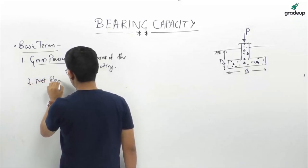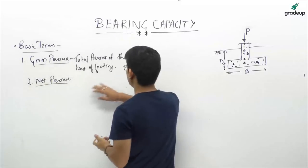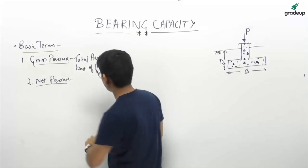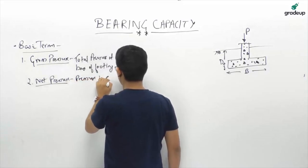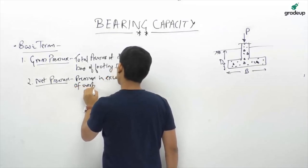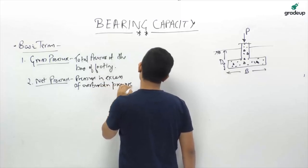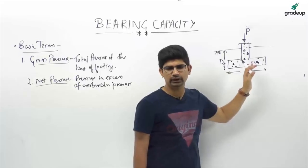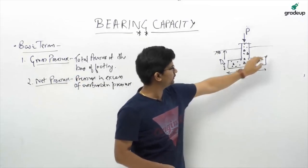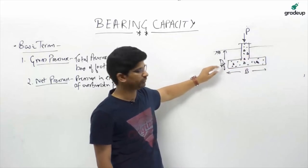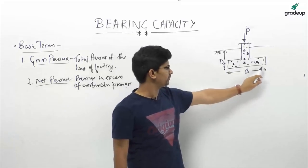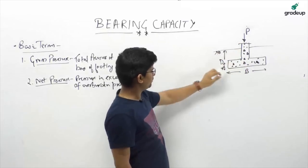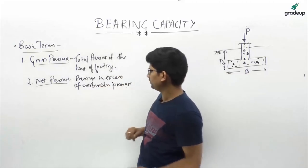Net pressure is the pressure in excess of the overburden pressure. At the base of the footing, load P plus the overburden pressure (which is gamma × Df) gives the gross pressure. Net pressure = gross pressure minus overburden pressure. So, net pressure is the pressure in excess of overburden.